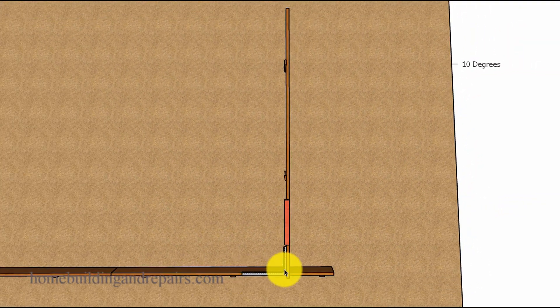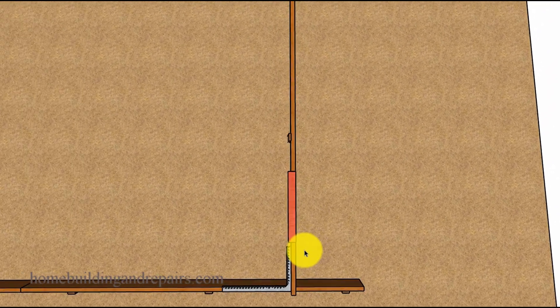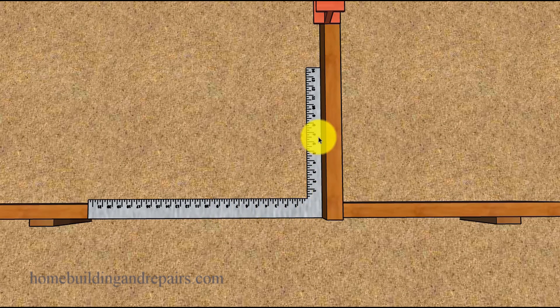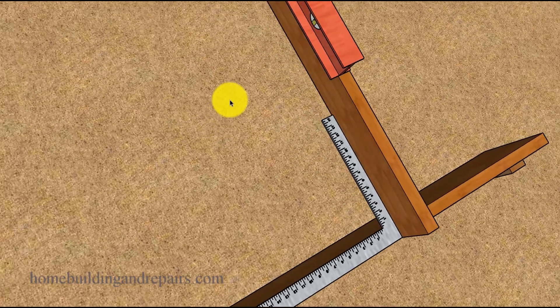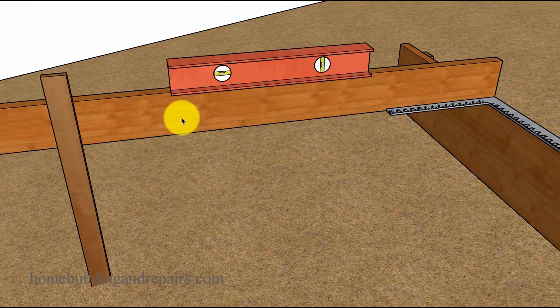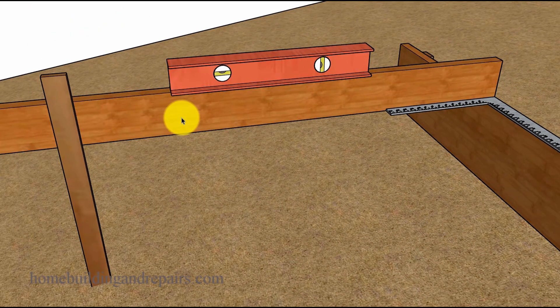A framing square might provide you with an excellent place to start. You can simply grab the framing square and line it up like this. I do have other videos on how to square something, and I will put links to those in the video comment area.